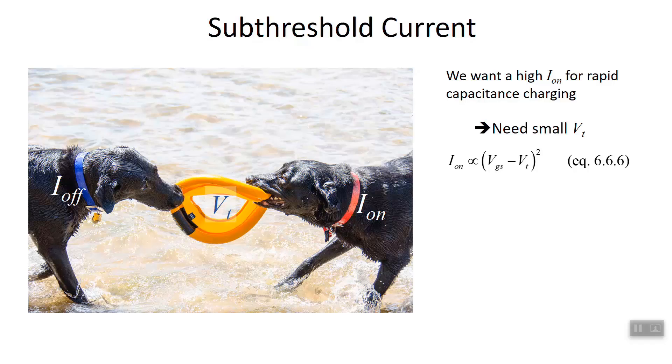Last time I discussed this competition that we have between the on and the off currents through a MOSFET, in particular a MOSFET that is part of a CMOS gate, which is what comprises the majority of what's inside of a computer chip.